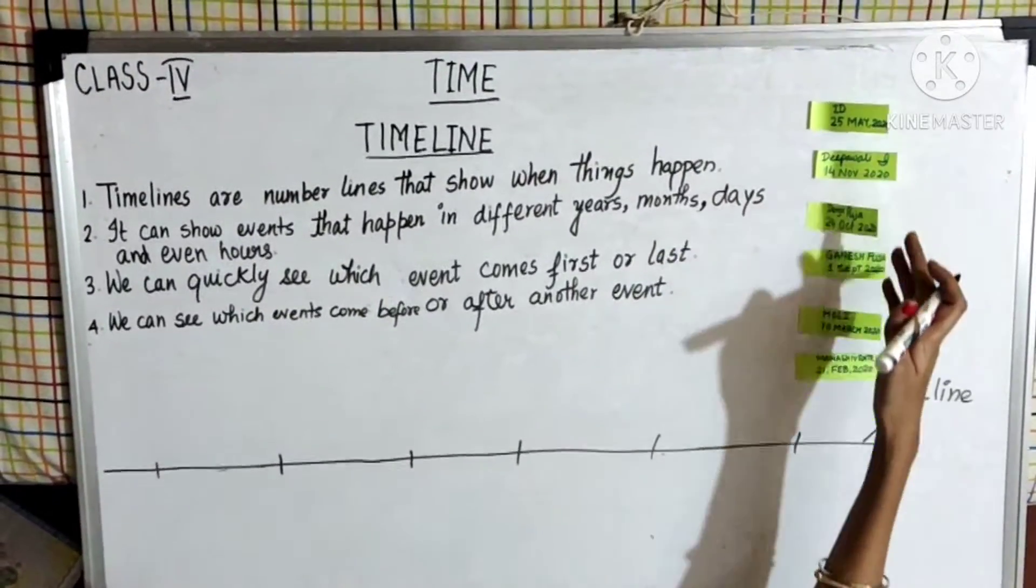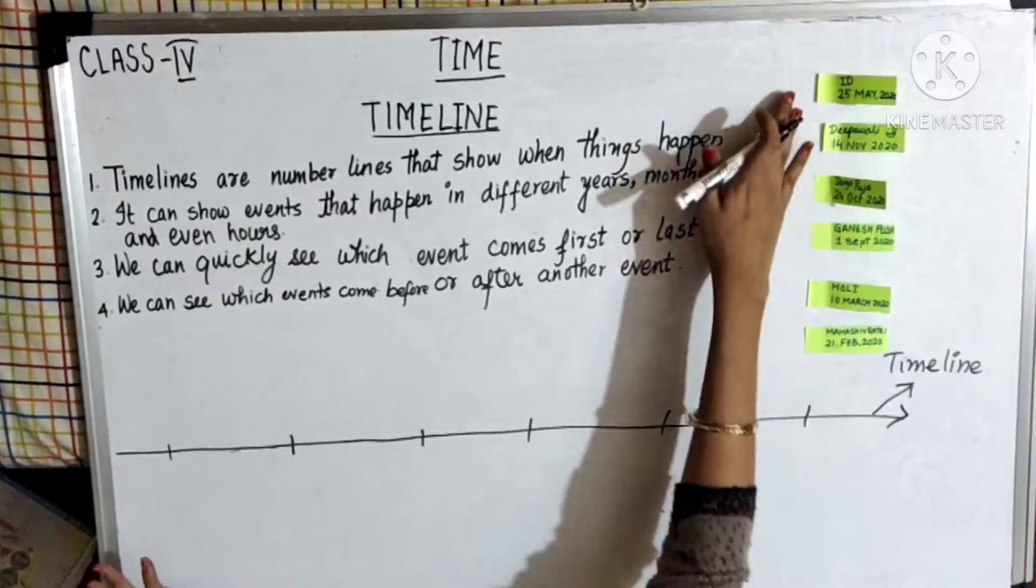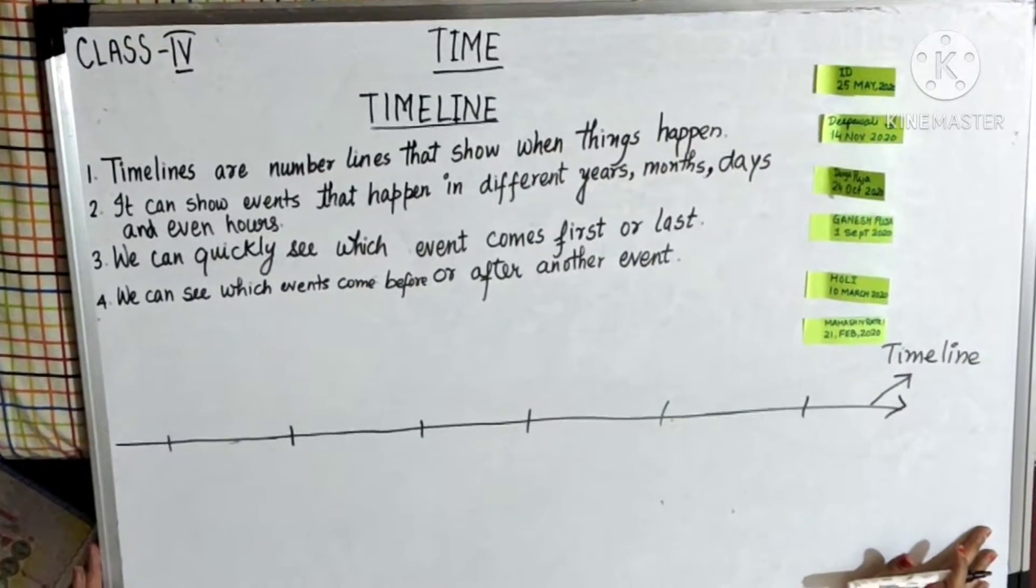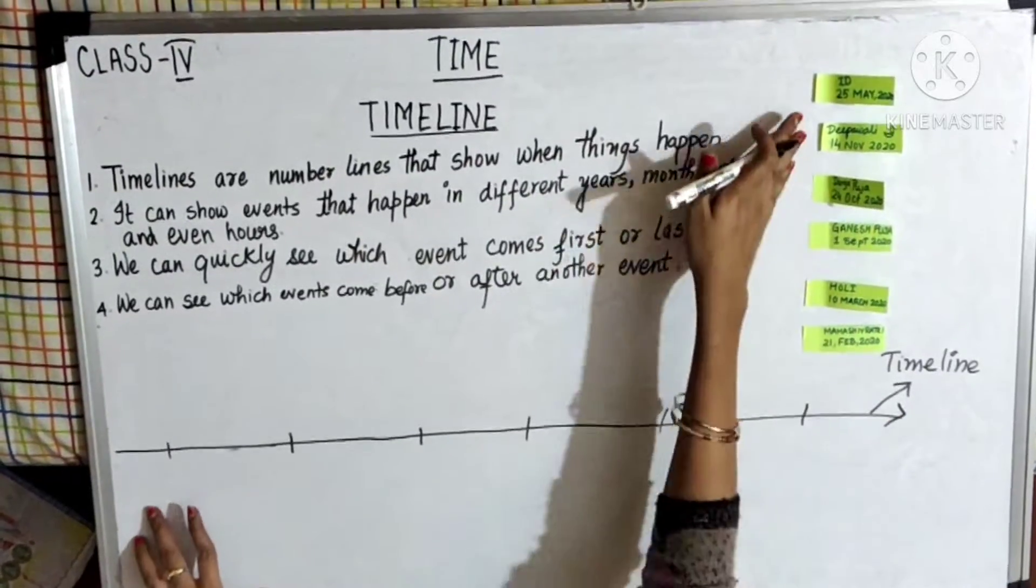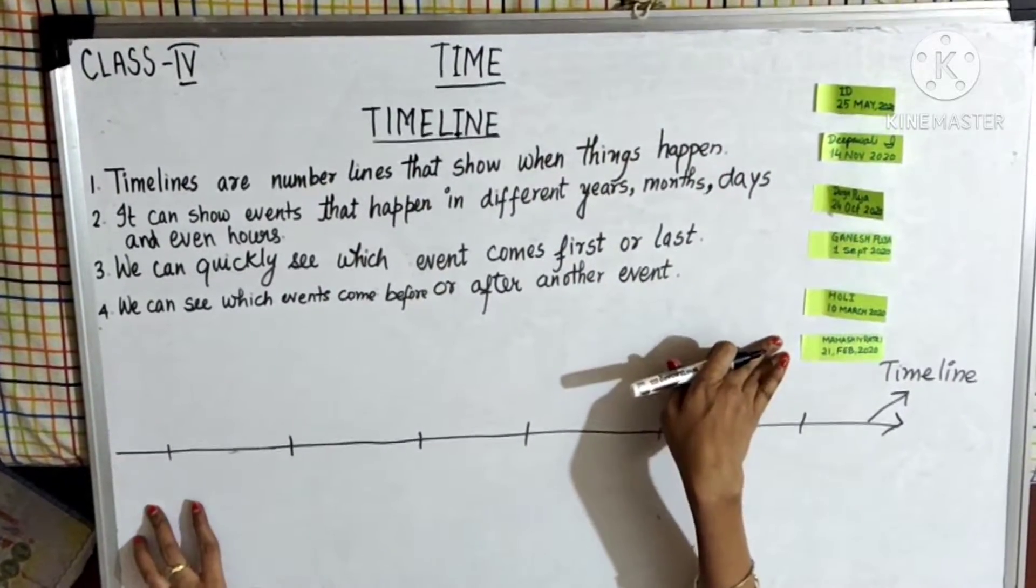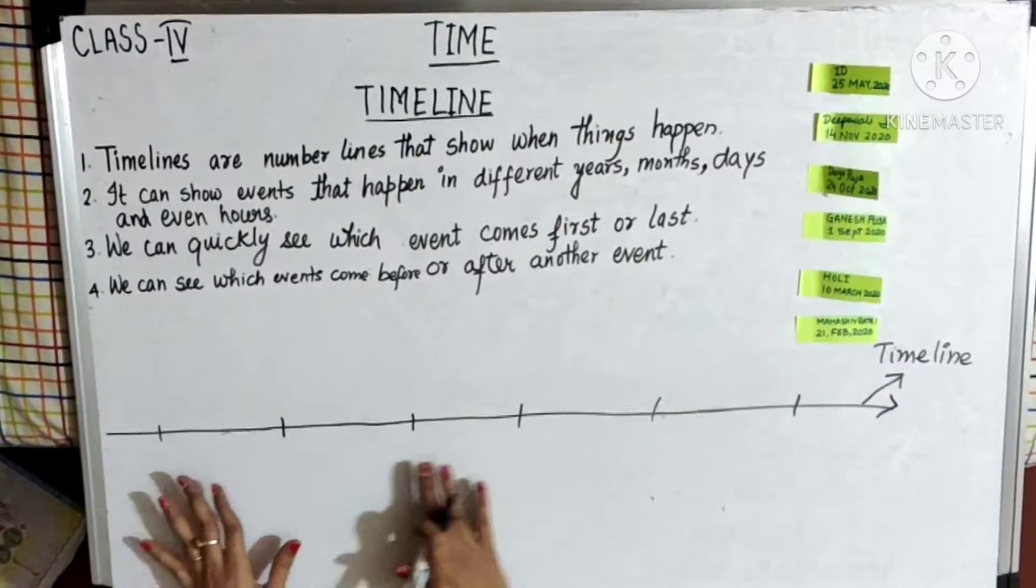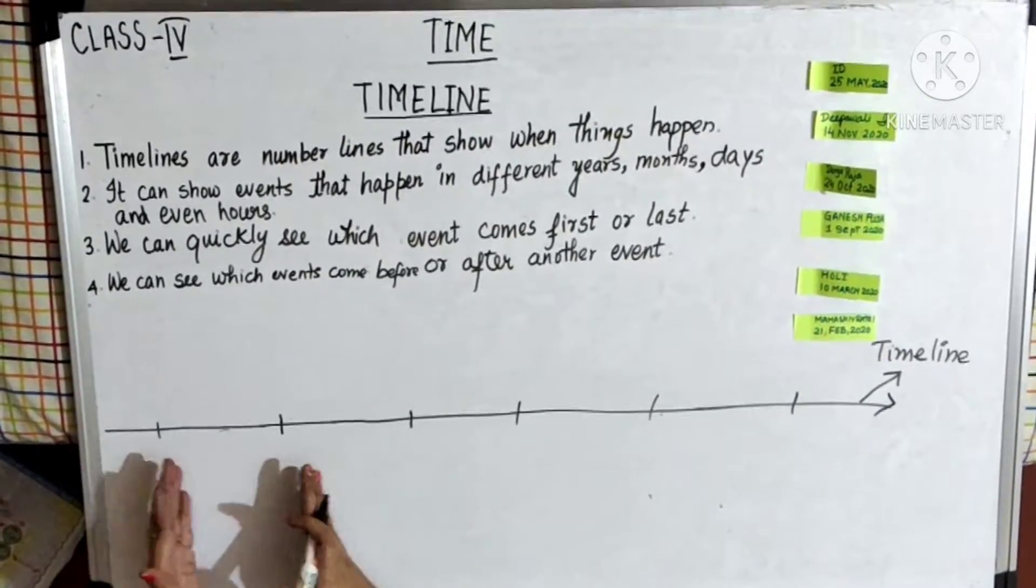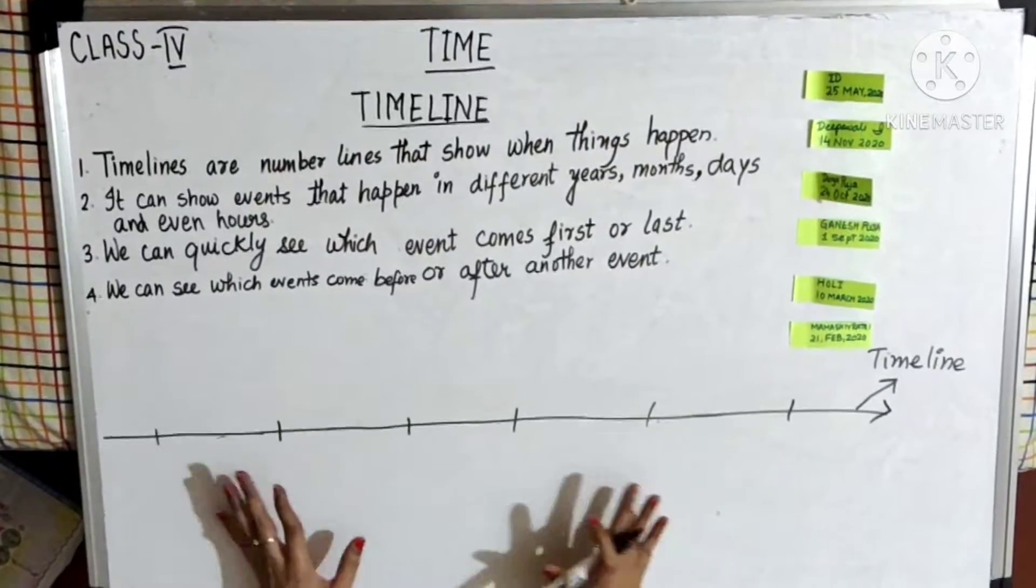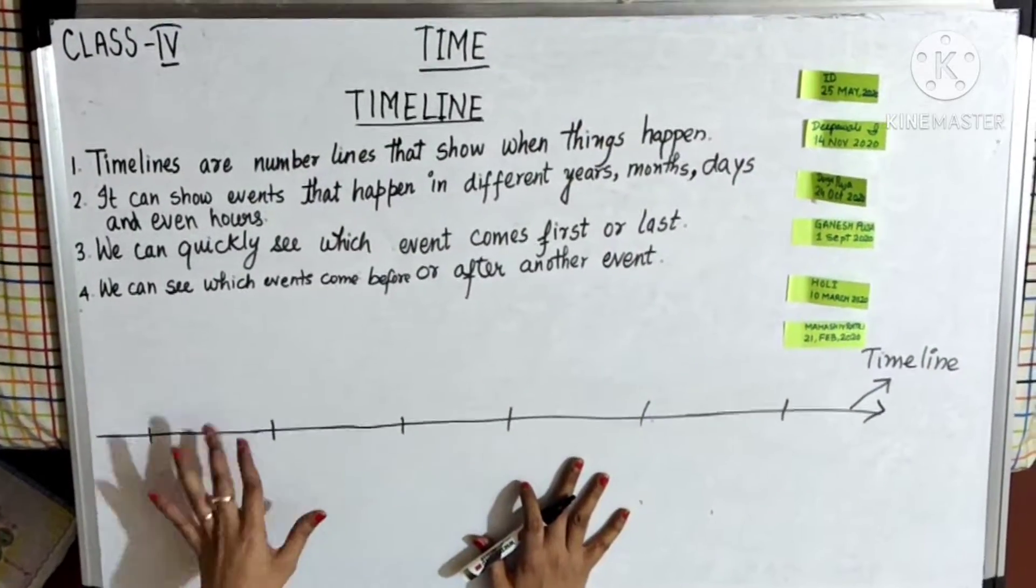Now here are some events which I have pasted. First of all, in a timeline we have to arrange the events in proper order. Now this is my timeline. I have drawn a horizontal line and divided this line into different parts. Here we have to arrange the different events.